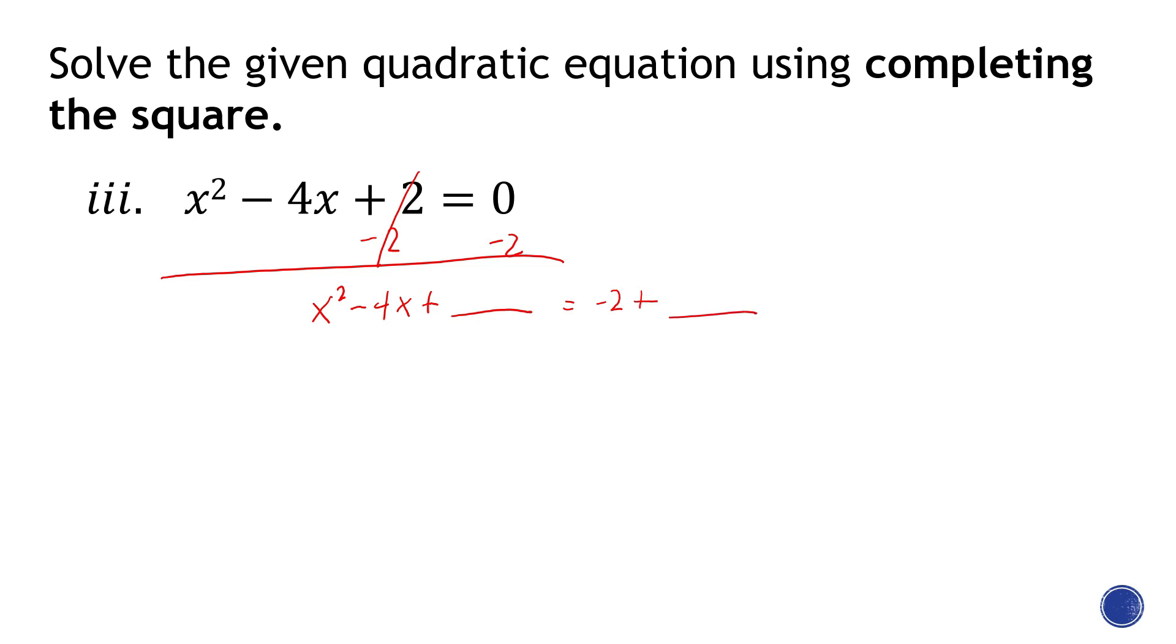Alright, so the objective here is to make the left side a perfect square trinomial, and to do that, we need to find that constant number. To find that, what we need to do is to simply divide the middle term by 2.